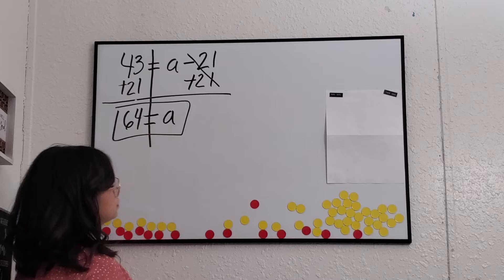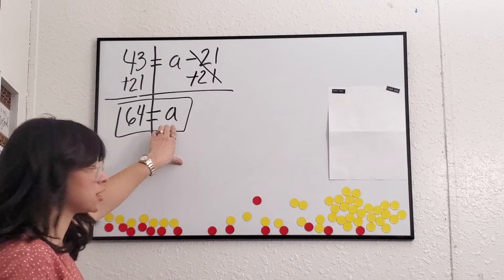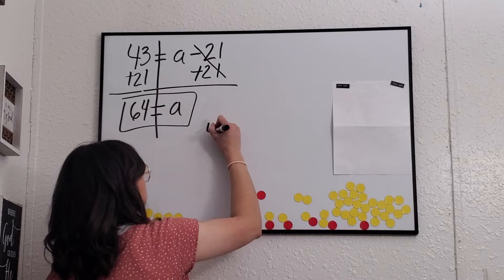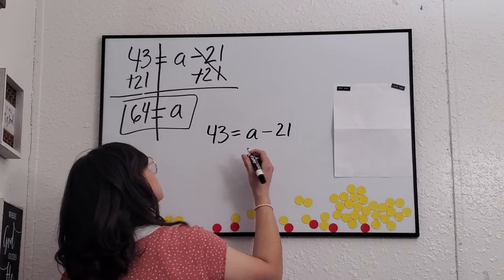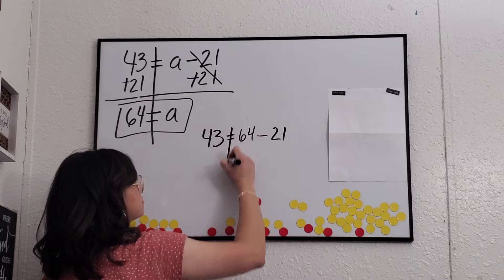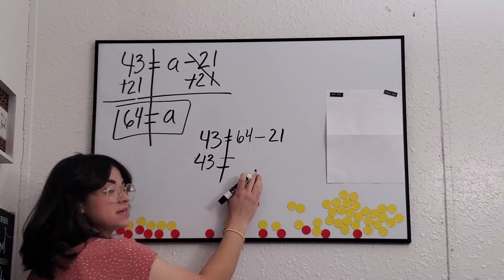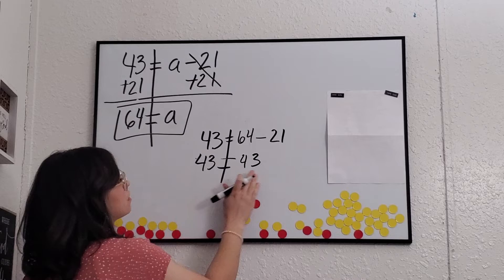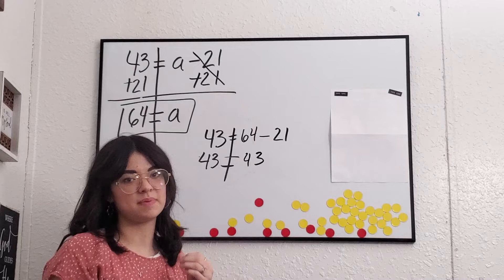One key tip for students is that they can take the number they just solved — 64 for the variable — and plug it back into the equation to make sure the answer is correct. So let's check: 43 equals a minus 21. We're replacing a with 64. 64 minus 21 — both sides must equal 43. 4 minus 1 is 3, 6 minus 2 is 4 — that's 43. Those are balanced, so that's the correct answer for the variable.